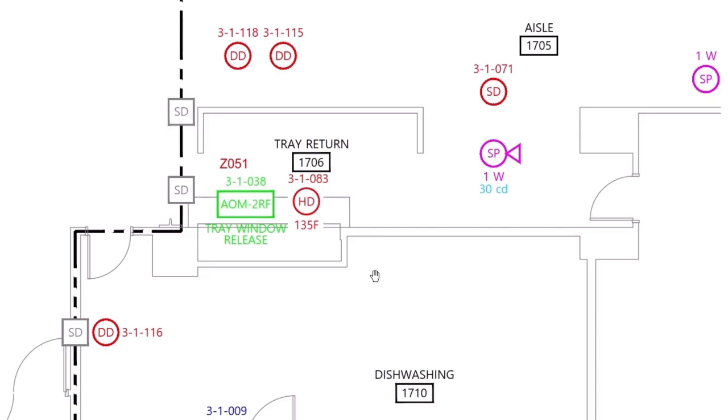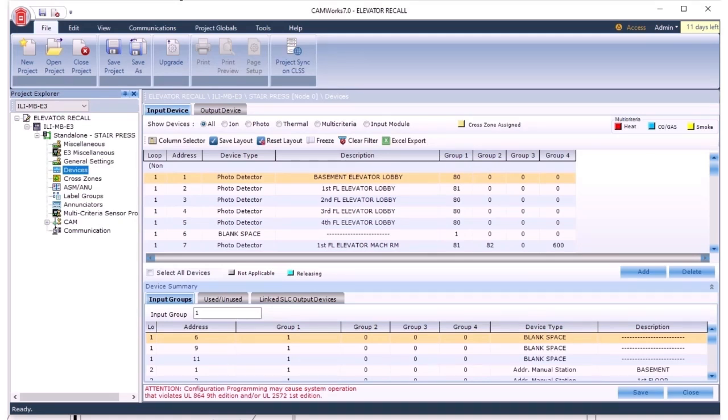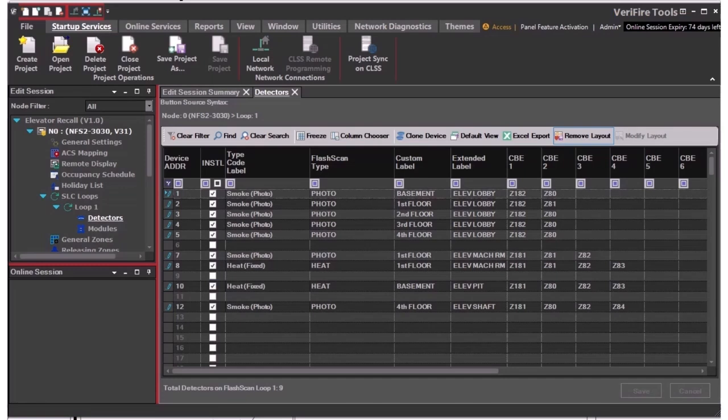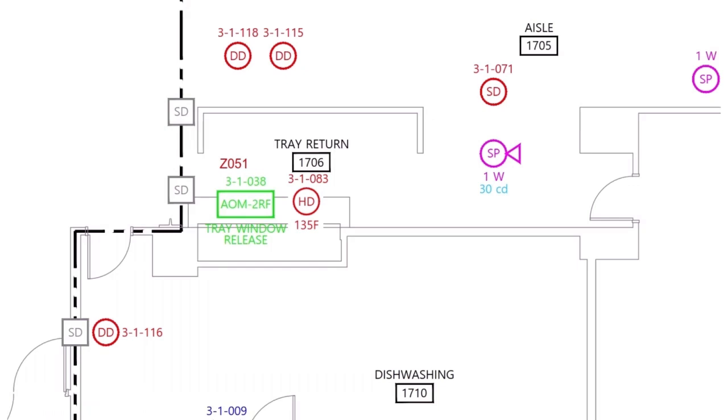So what you should do, the correct way to do this is either have the program - this is the GameWell FCI program, CanWorks, or this is the Verifier Tools - that is the correct way to make the change. But sometimes you're in a pinch, and this will work for a Notifier 3030, that you can utilize the panel menus to replace this device. But it is a very specific procedure, and we will be going over that with the panel.